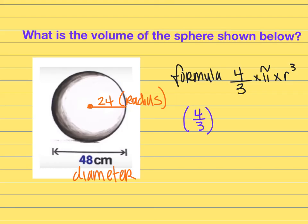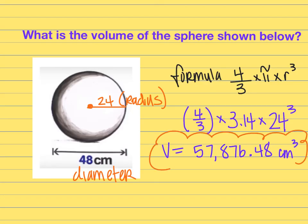So parentheses 4 divided by 3 parentheses, times 3.14 - going to use that for π - times the radius. On this example the radius is 24, cubed. The answer to this one is much larger. The volume of this sphere is 57,876.48, and that one does not need to be rounded - it ended perfectly. It's measured in centimeters, and again, all volume answers get the exponent of 3 to show how many cubic units fit inside that figure.